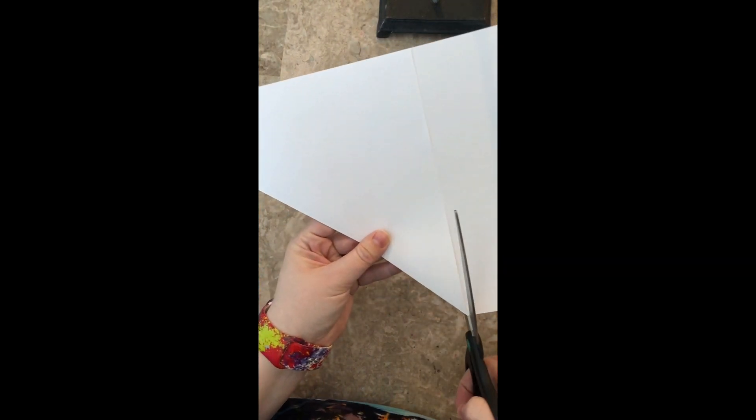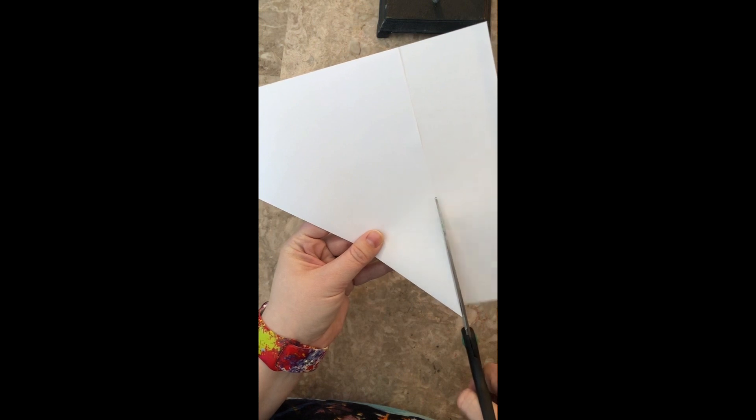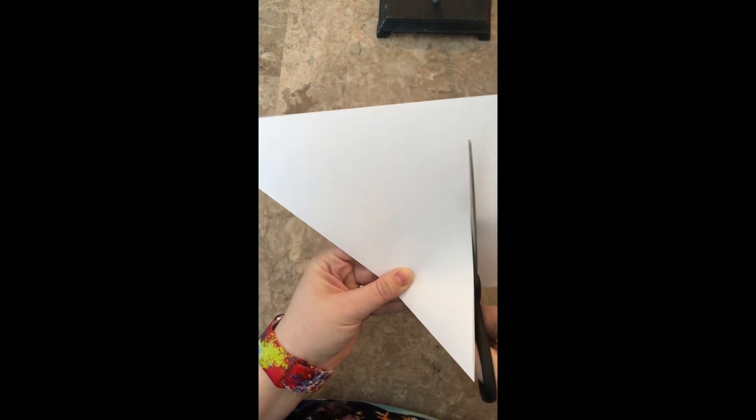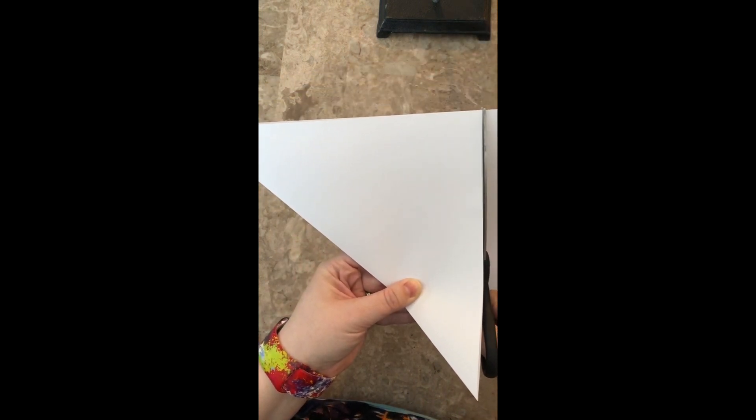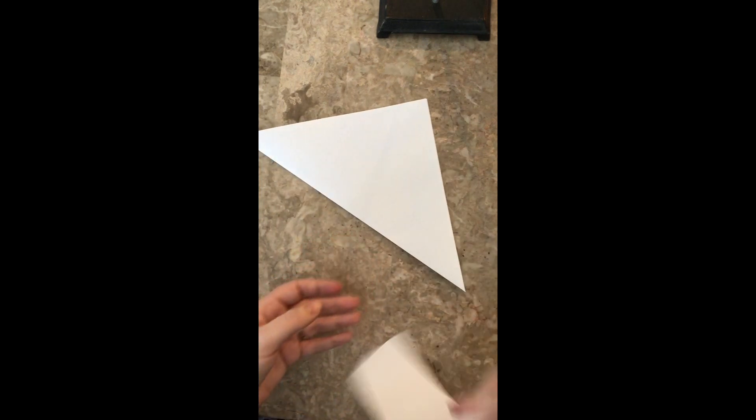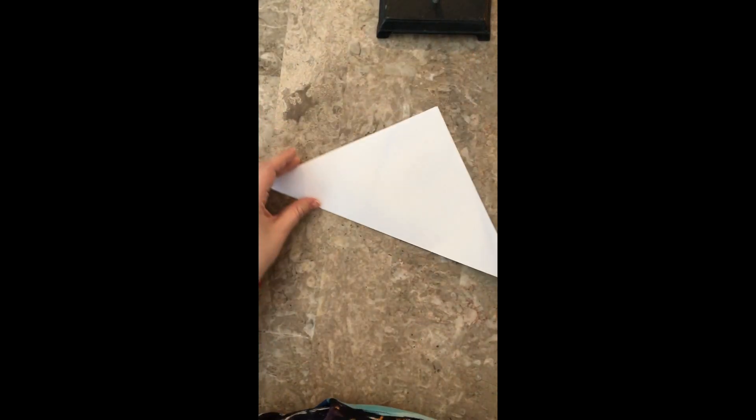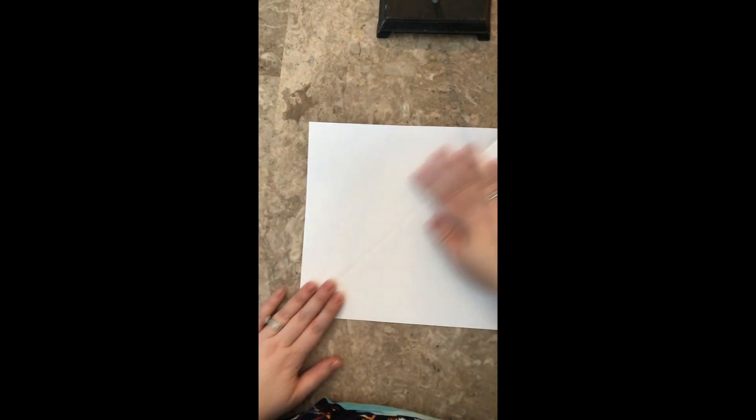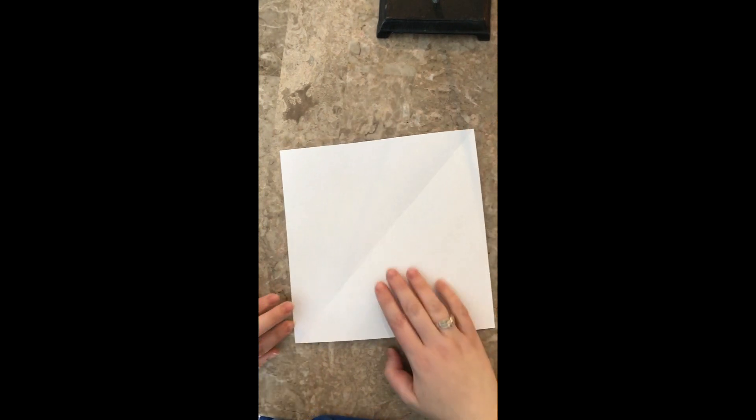Then we're gonna cut that flap at the top off, just like if you were to make a fortune teller. A lot of these steps to this tutorial are very similar to making a fortune teller. Now I have a square piece of paper and my first fold is already done for me.